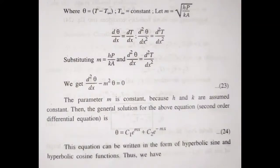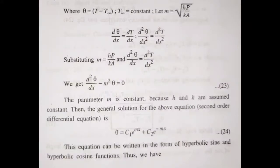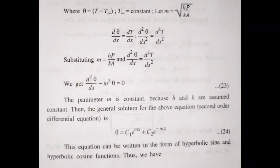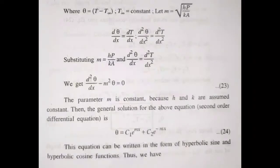We apply the substitution θ = T − T∞, where T∞ is constant. We define m = √(hP/kA). Then the governing equation becomes: d²θ/dx² − m²θ = 0.